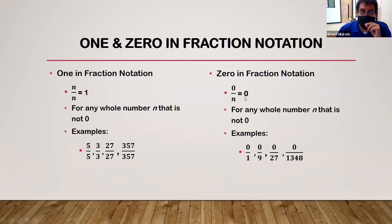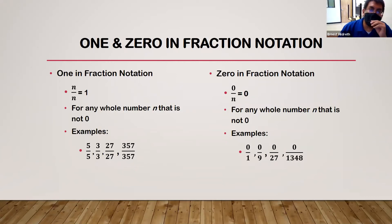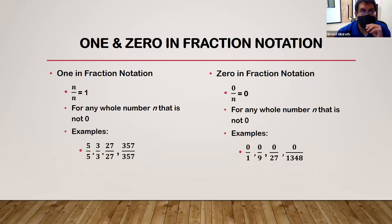Zero in fraction notation: zero over any number equals zero, for any whole number where n is not zero. Examples include zero over one, zero over nine, zero over 27, and zero over 1348 — those all equal zero. The reason is that if you have zero in the denominator it would be undefined, coming up as an error on scientific or graphing calculators.